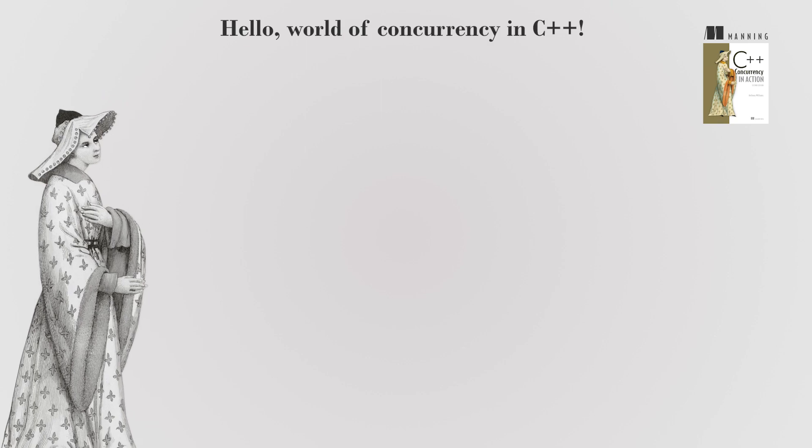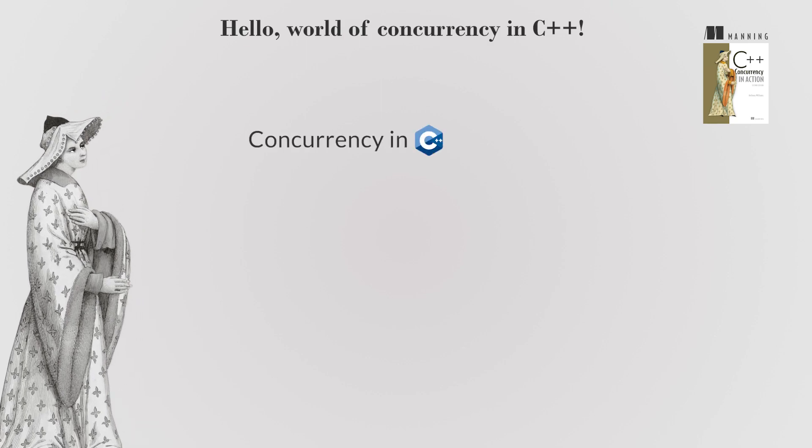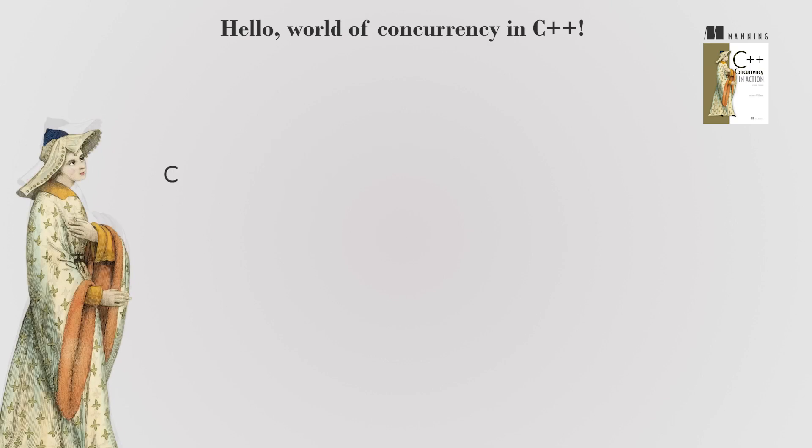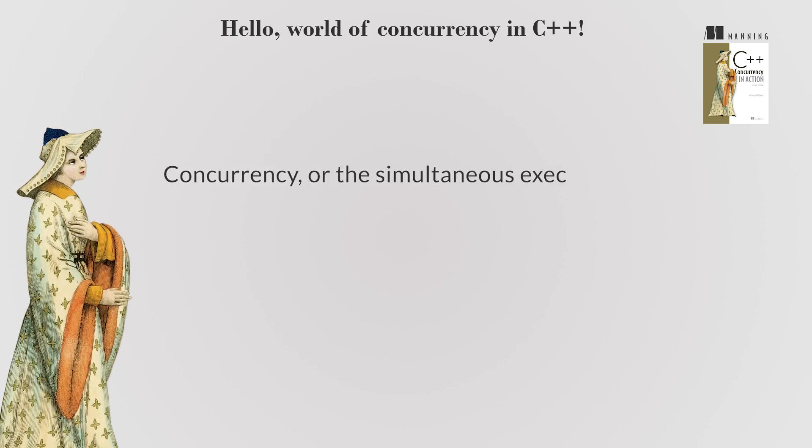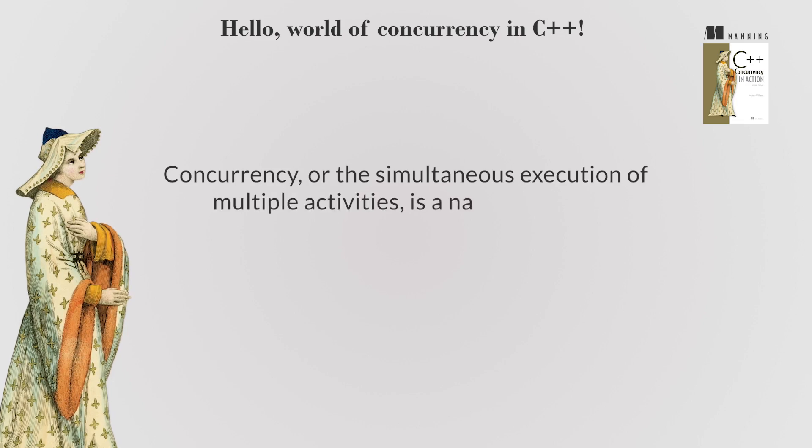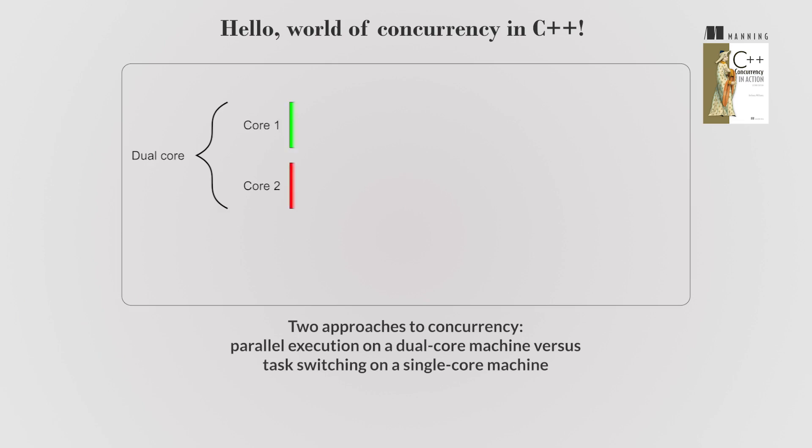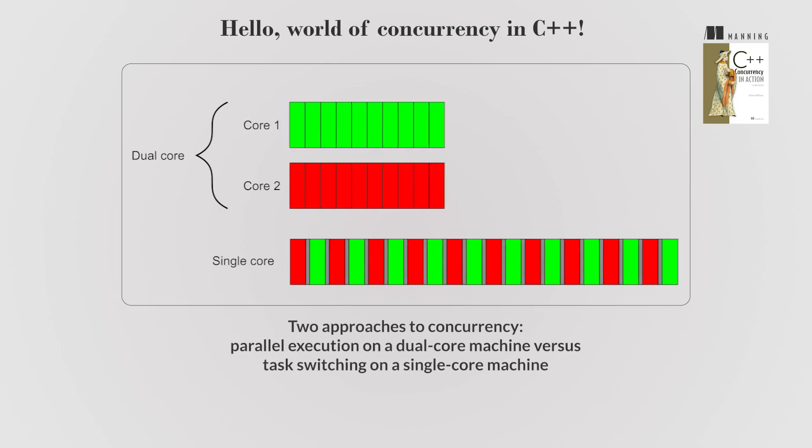This chapter delves into concurrency in C++, discussing its importance, history, and support in the C++ standards. Concurrency, or the simultaneous execution of multiple activities, is a natural part of life and computer systems. With the rise of hardware concurrency, computers can genuinely run multiple tasks in parallel, improving performance and responsiveness.